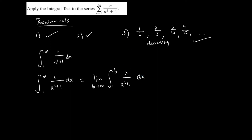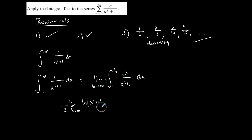U-substitution will work here. The denominator is u, so du = 2x dx, meaning I need a factor of 2, and I get a 1/2 in front. Taking the actual integral, I have 1/2 times the limit as b approaches infinity of the natural log of the absolute value of x²+1, evaluated from 1 to b. Plugging in the values: 1/2 times the limit as b approaches infinity of ln(b²+1) minus ln(1²+1), which is ln(2).